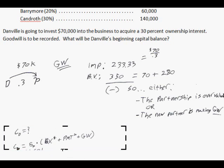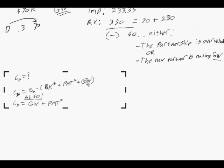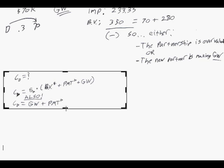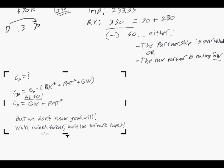But we have another equation that might help. The second way to find Danville's capital balance is: Danville's capital balance equals goodwill plus payment. That's goodwill again — we've gone in a circle. We don't know goodwill in either equation. Both equations use goodwill — we're ruined forever, right? But no, you don't need to burn the torture tapes. Check it out.